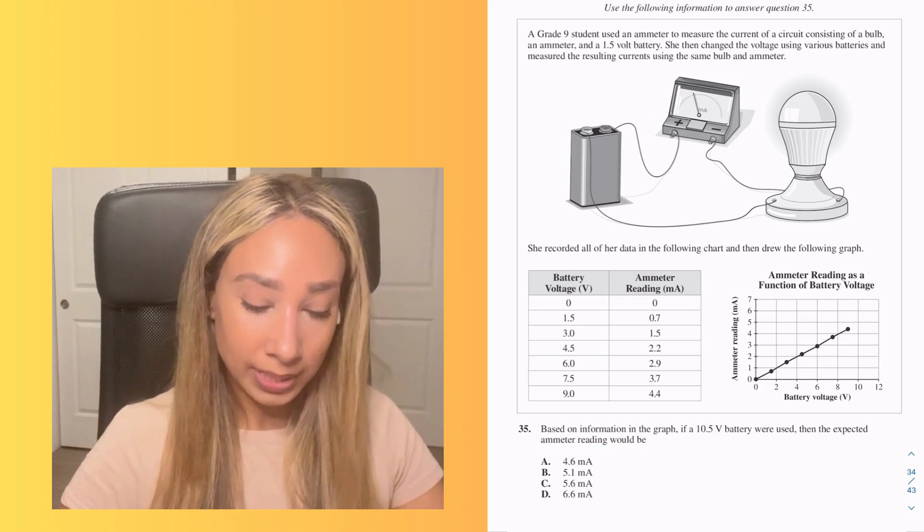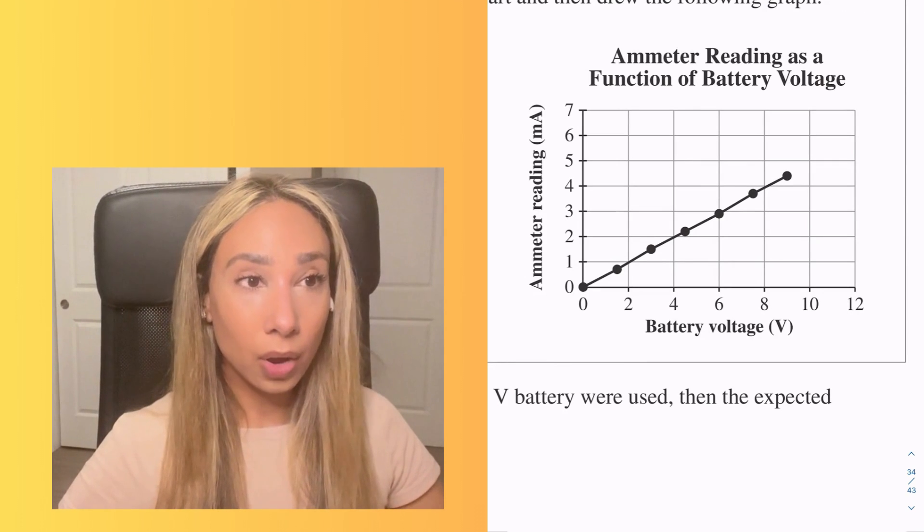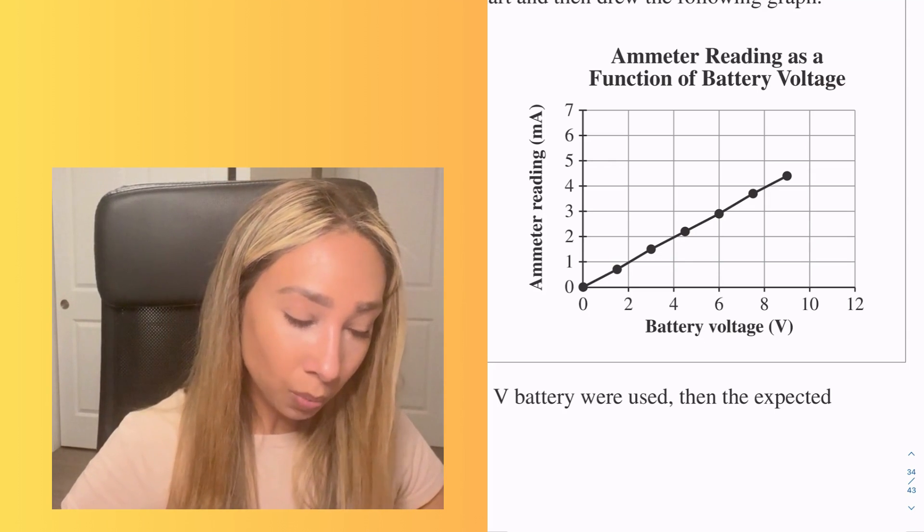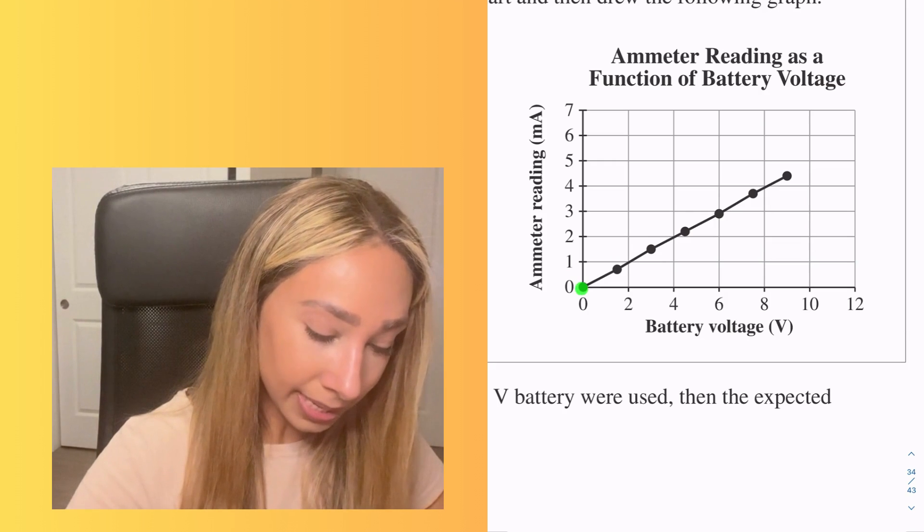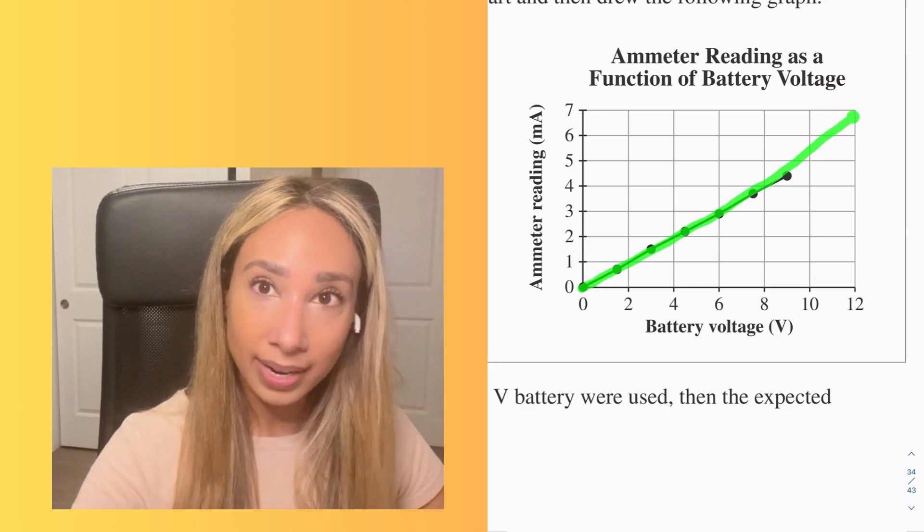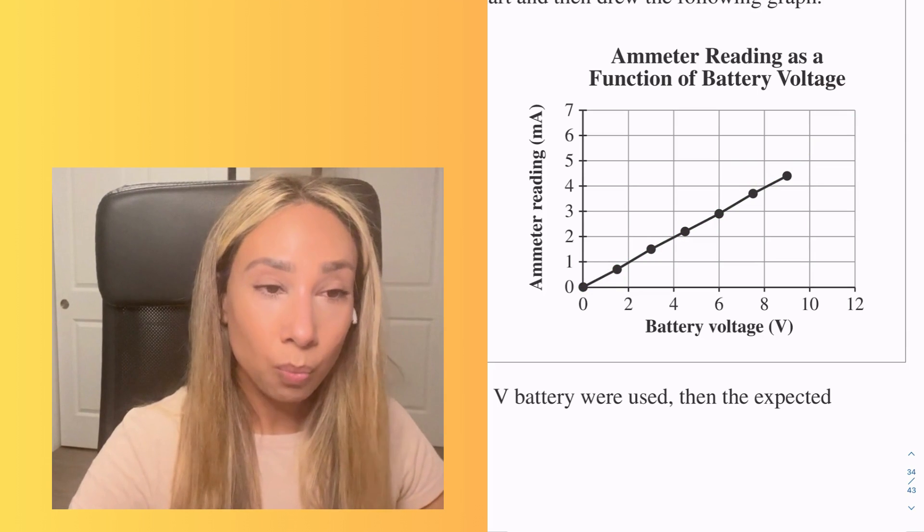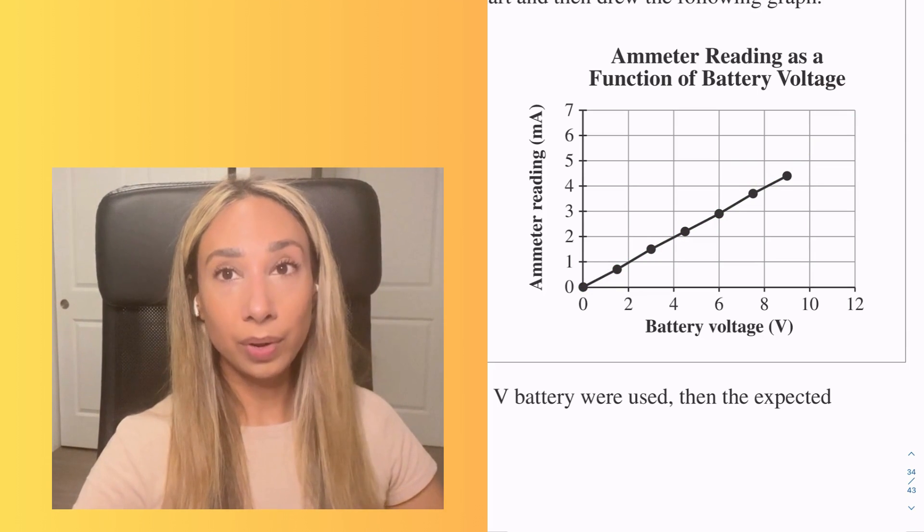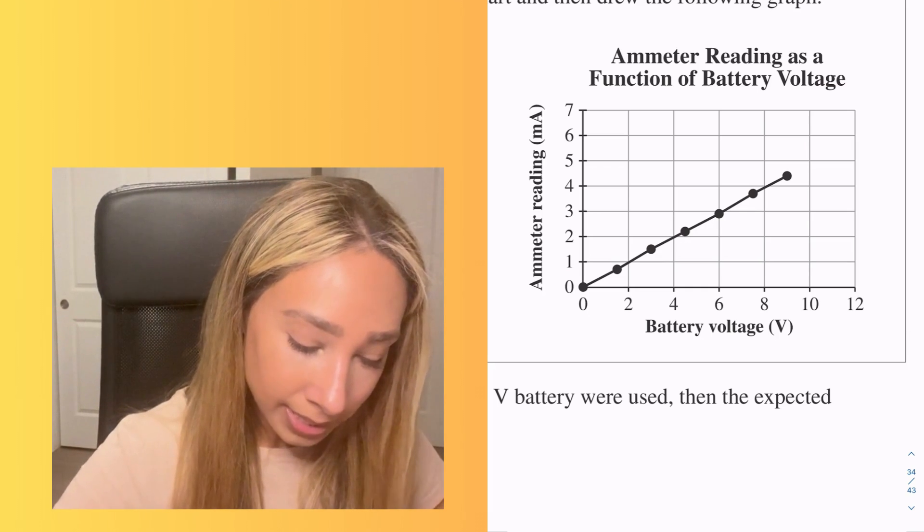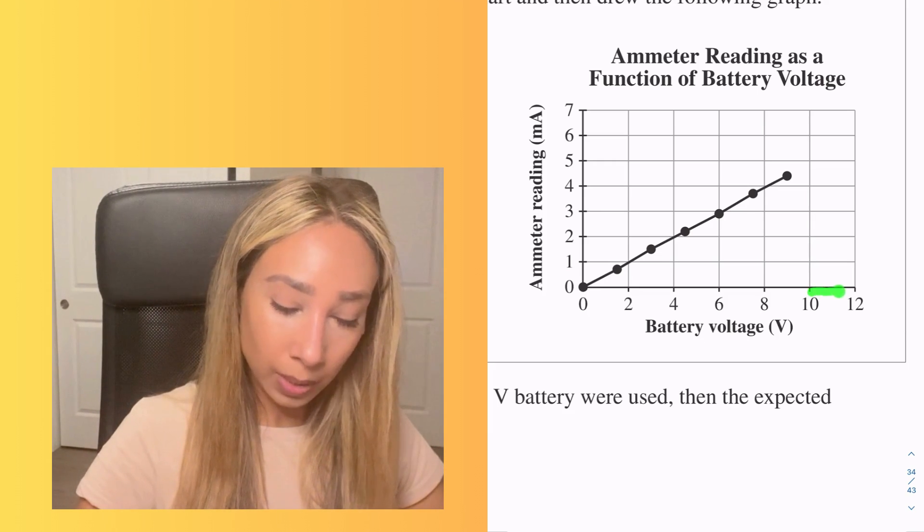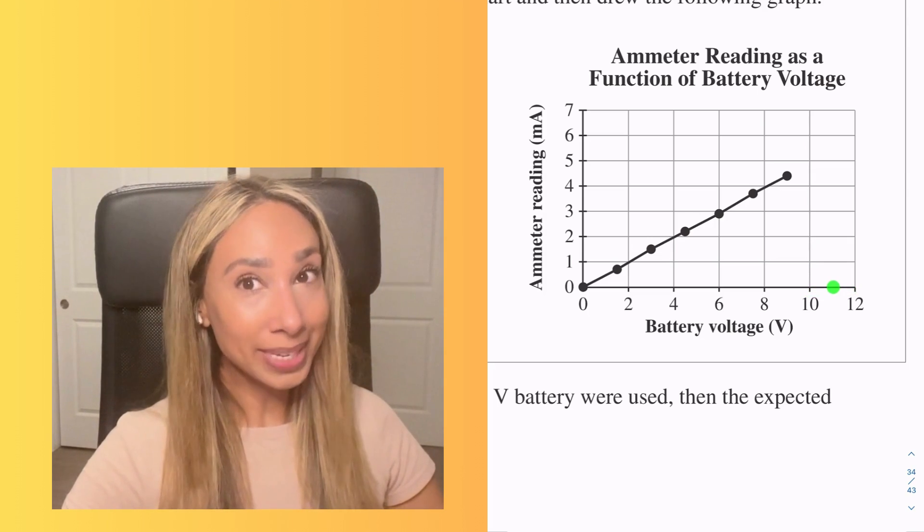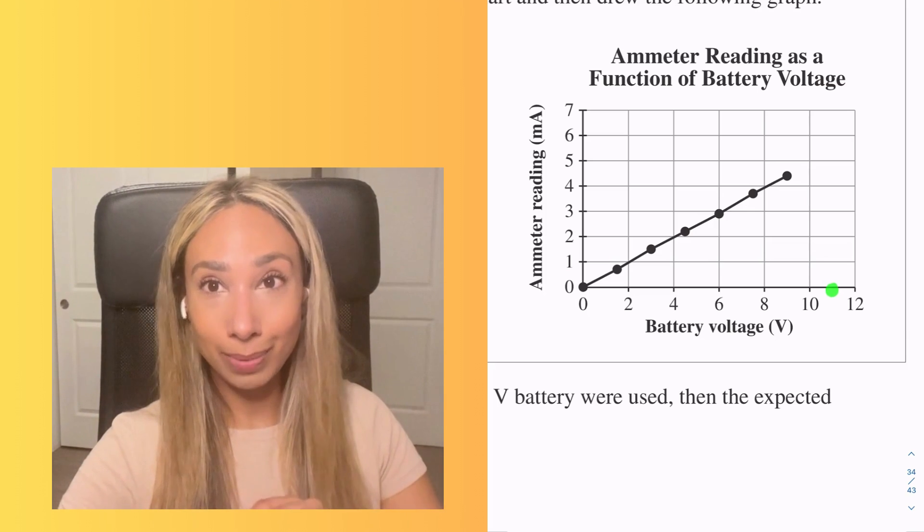So this question is really assessing your knowledge of looking at scientific graphs. So one thing I noticed with the graph right away is if I were to continue this graph, it would go on. And that's perfect because the question is asking me what would happen if I used a 10.5 voltage battery. So 10.5, we know it's going to fall somewhere here. Right in the middle would be 11. That wouldn't be 10.5. They purposely done a scale of two at the bottom. So that would be 11.5.